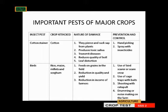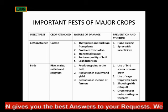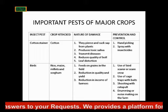The next, which is the last pest of major crops I will be talking about, is birds. They attack rice, maize, millet, and so on — they are majorly serious. They feed on grains in the field, they reduce the quality and yield of the plants, and they reduce the income of the farmer.